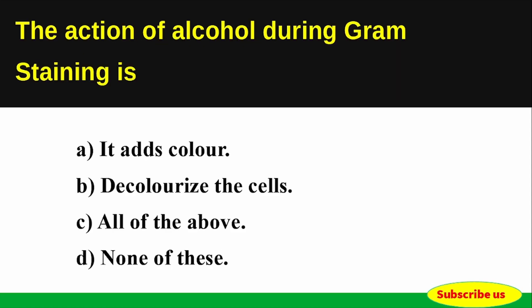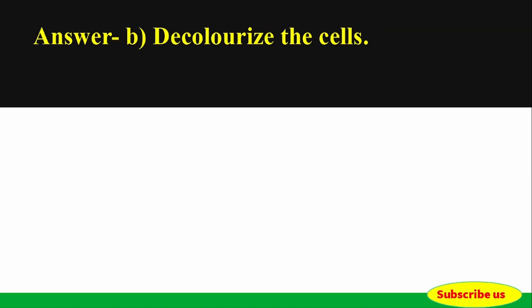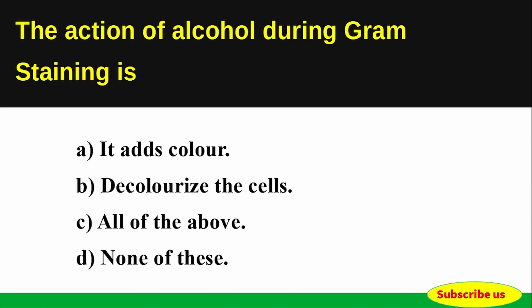Question: The action of alcohol during Gram staining is — Options: A) It adds color, B) Decolorize the cells, C) All of the above, D) None of these. Correct answer: Option B — Decolorize the cells. The action of alcohol during Gram staining is decolorization of the cells.